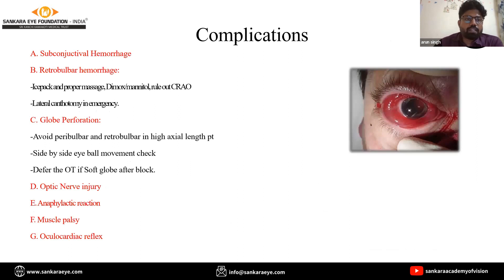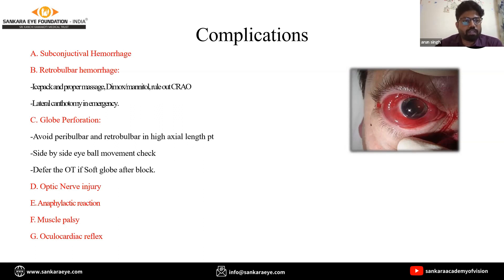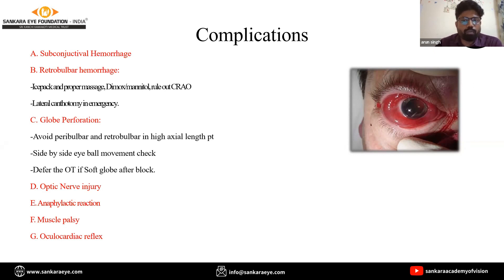Complications of local anesthetic agents include subconjunctival hemorrhage, which is commonly seen and does not cause much clinical effect. However, if there is significant subconjunctival hemorrhage along with ecchymosis and chemosis with severe pain, there is a chance of retrobulbar hemorrhage. In such cases, we should apply ice packs, give gentle massage, administer Diamox and mannitol, rule out CRVO using the fundus, and in an emergency perform lateral canthotomy.